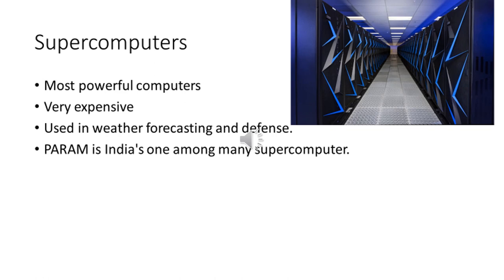The last type of computers are called supercomputers. They are the most powerful computers and are very expensive. They are used for weather forecasting and defense purposes, such as to control satellites and missiles. India has produced many supercomputers — Param is one of them.